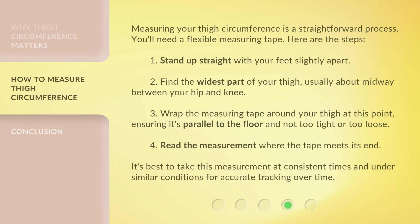Measuring your thigh circumference is a straightforward process — you'll need a flexible measuring tape. Here are the steps: one, stand up straight with your feet slightly apart; two, find the widest part of your thigh, usually about midway between your hip and knee; three, wrap the measuring tape around your thigh at this point, ensuring it's parallel to the floor and not too tight or too loose; four, read the measurement where the tape meets its end. It's best to take this measurement at consistent times and under similar conditions for accurate tracking over time.